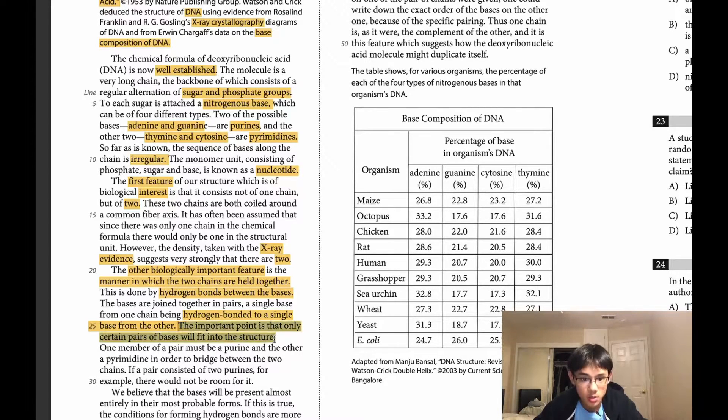This seems important. One member of a pair must be a purine. So purine, let's just refresh what that was. A purine is adenine or guanine. One member of the pair must be a purine and the other a pyrimidine. Pyrimidine meaning thymine and cytosine. So we see here another key scientific finding, a certain rule of DNA pairing. And that rule is that a purine must be paired with a pyrimidine. So this is also very important to note.